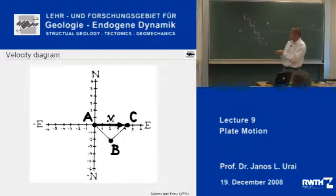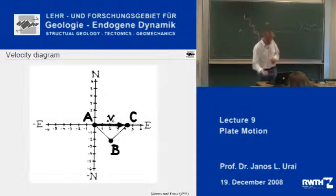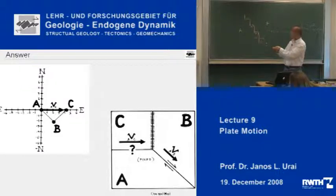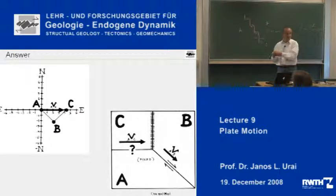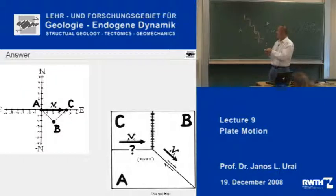You take the velocity of A versus B, B versus C, and then what you can calculate is the velocity of A versus C. If you have done that, you will find that the velocity of A versus C is in fact parallel to the plate boundary. And therefore, this boundary must be a transform boundary. This is the way that you can use velocities to calculate the one missing velocity between three plates.